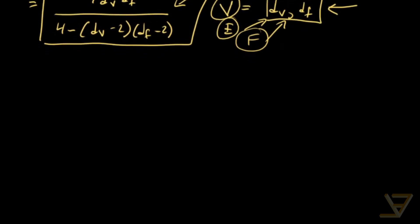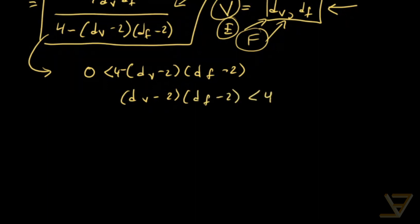Now notice that the denominator must be positive. So we must have 0 is less than, strictly less than, DV minus 2, DF minus 2. So that means DV minus 2, DF minus 2 is less than 4.